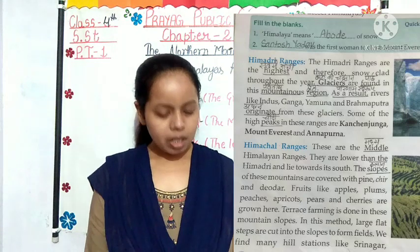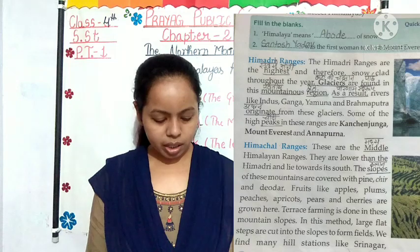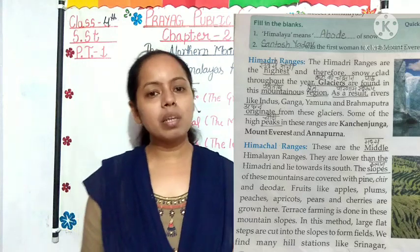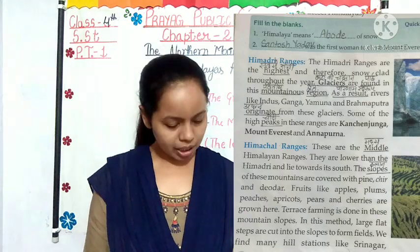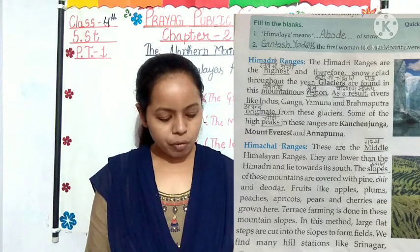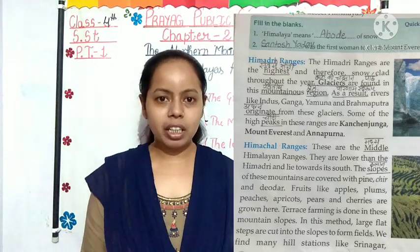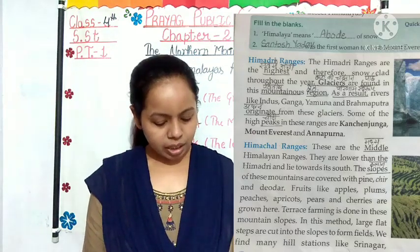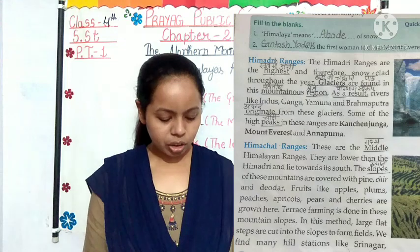Now let's start our chapter. First one is Himadri range. The Himadri range are the highest and therefore snow-clad throughout the year. The Himadri range is the highest in the Himalaya, so it remains covered with snow the entire year. Glaciers are found in this mountainous region. As a result, rivers like Indus, Ganga, Yamuna and Brahmaputra originate from these glaciers.